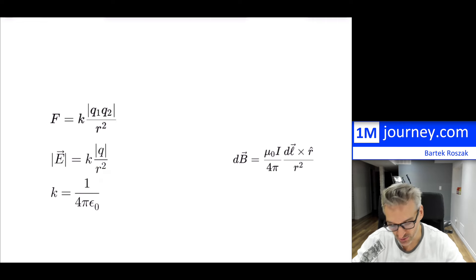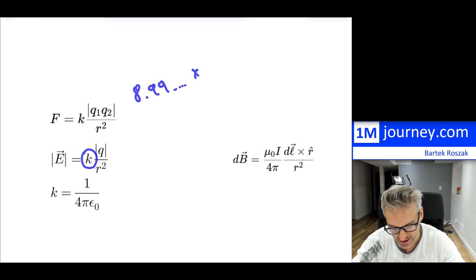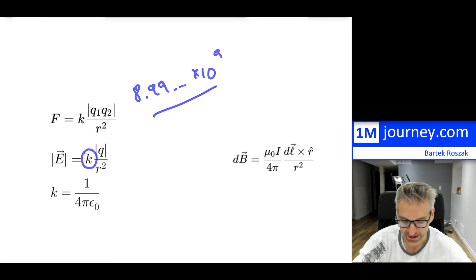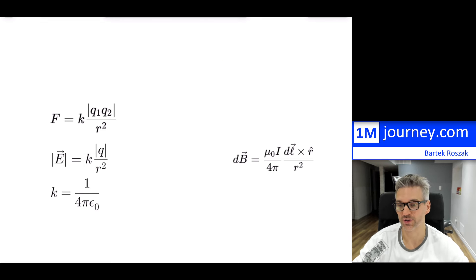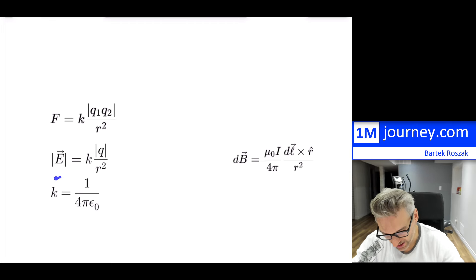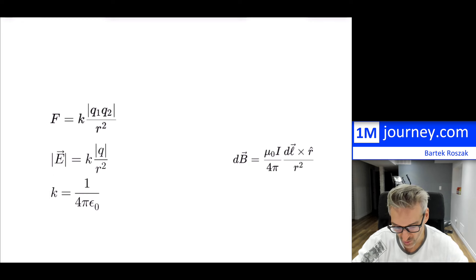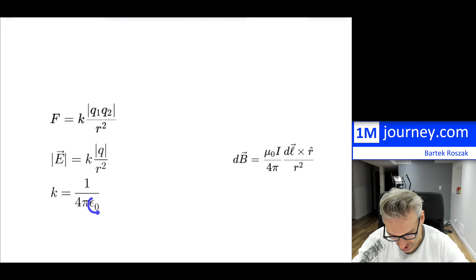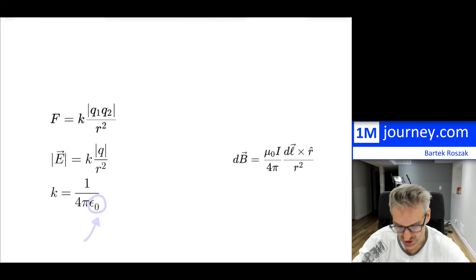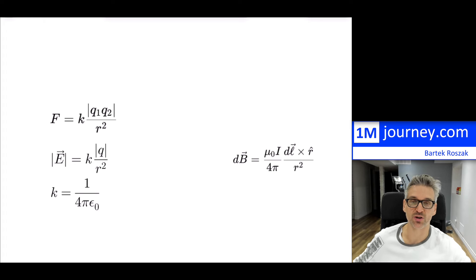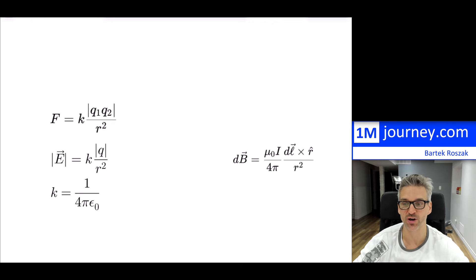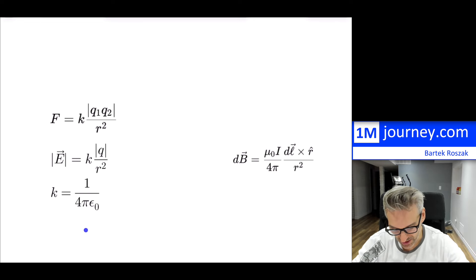Technically, what you had is this k, which is really just 8.99 × 10⁹ — that's the numerical result of it — and it actually comes from this. It is equivalent to 1 divided by 4π — yes, it is the pi from the circle — times the permittivity constant. So this k is typically hidden when you're starting off and learning about electricity, but as you keep going on, it is worth mentioning that k is actually made up this way.